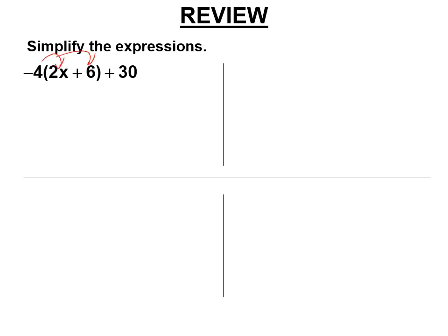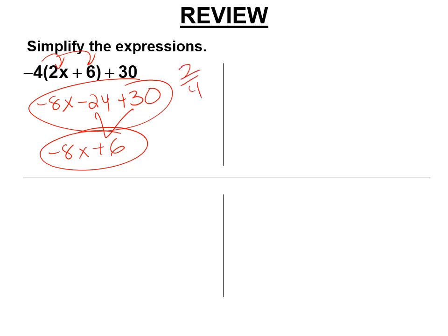So we're distributing here. Negative 4 times 2x, negative 8x, negative 4 times 6, minus 24 plus 30. Now, that is not the right answer. Why is that not right? Because you have to combine like terms if they're like terms in the expression. So you have to do negative 8. Negative 24 plus 30 is positive 6. You have to do that. If you fail to do that, it's wrong. It's not half credit, right? Leaving this is like leaving two fourths instead of putting 1 half. You haven't finished simplifying.